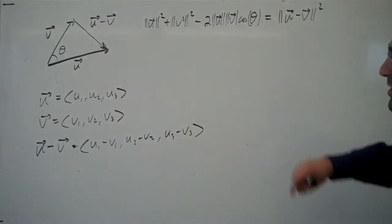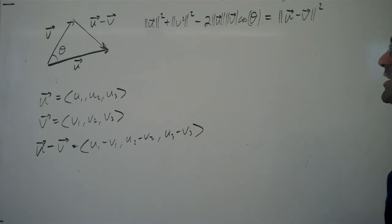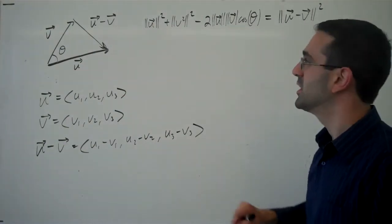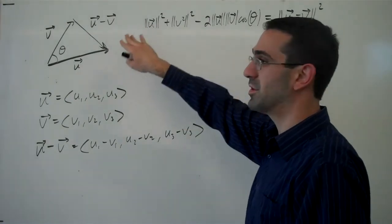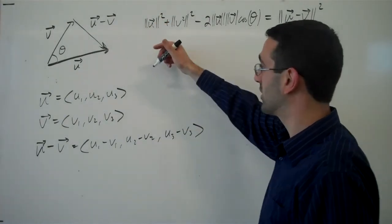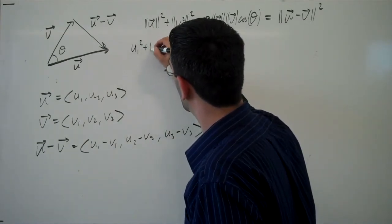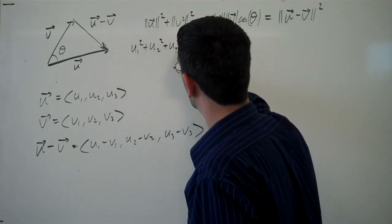Now we need to think about the magnitudes of these vectors. The magnitude of u would be the square root of the sum of the squares squared. So the square will undo the square root for the magnitude. We'll end up with u1 squared plus u2 squared plus u3 squared.